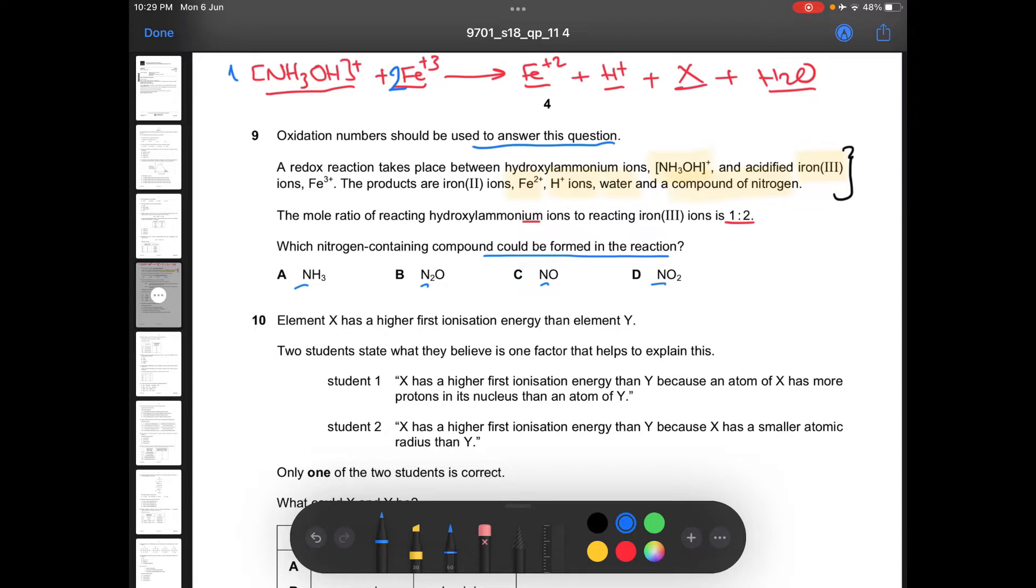Okay, so according to the balancing of this equation, as we can see here, you will take the pairs. So we can take the first pair in here, which is ammonium hydroxide, and its relatable ion, or let's say the corresponding compound after there, which is X, which is a compound of nitrogen. And for sure, iron 3+ and 2+.